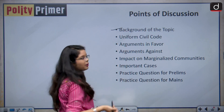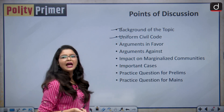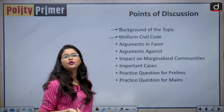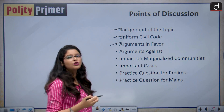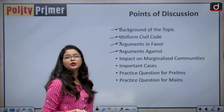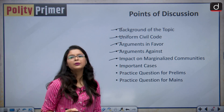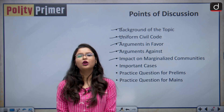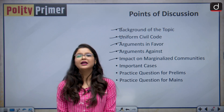So firstly, we'll see the background of the topic, then we'll understand the meaning of the term Uniform Civil Code, then we'll analyze some of the arguments which are put forward in favour of Uniform Civil Code, then we'll also see what are the arguments against it, then we'll see the impact on marginalized communities, then we'll see some of the important cases and the opinion of our Honourable Supreme Court. And in the end, we are going to see a practice question for your prelims examination and a practice question for your mains examination.